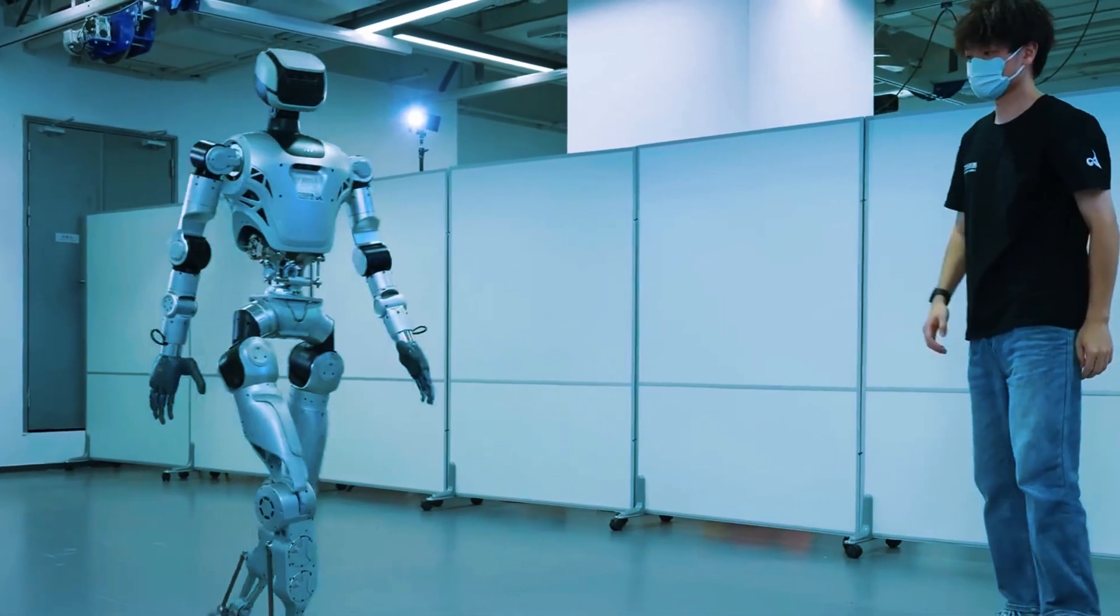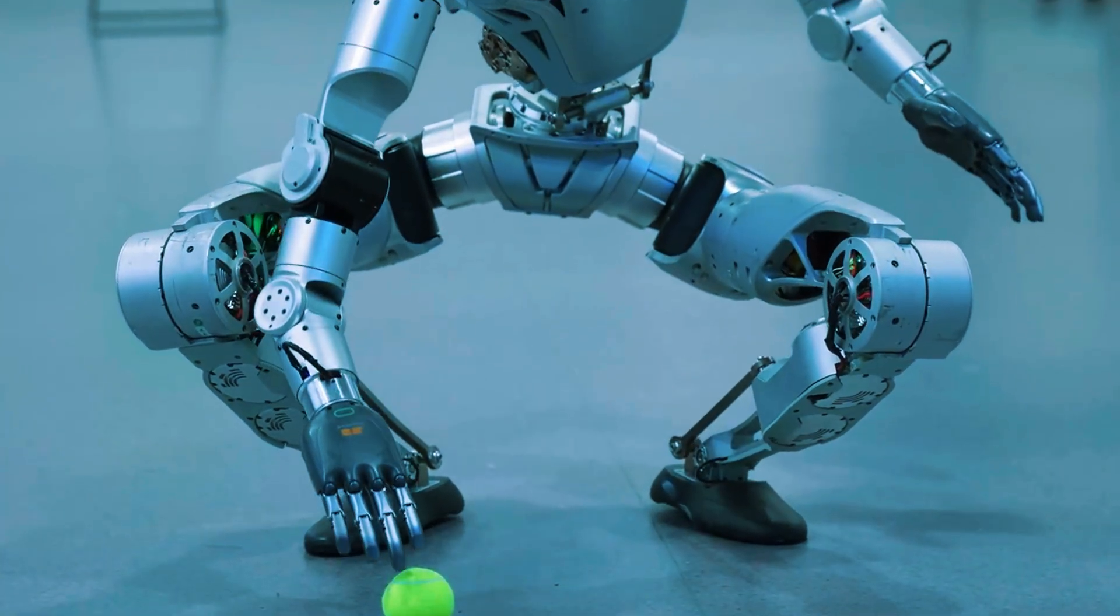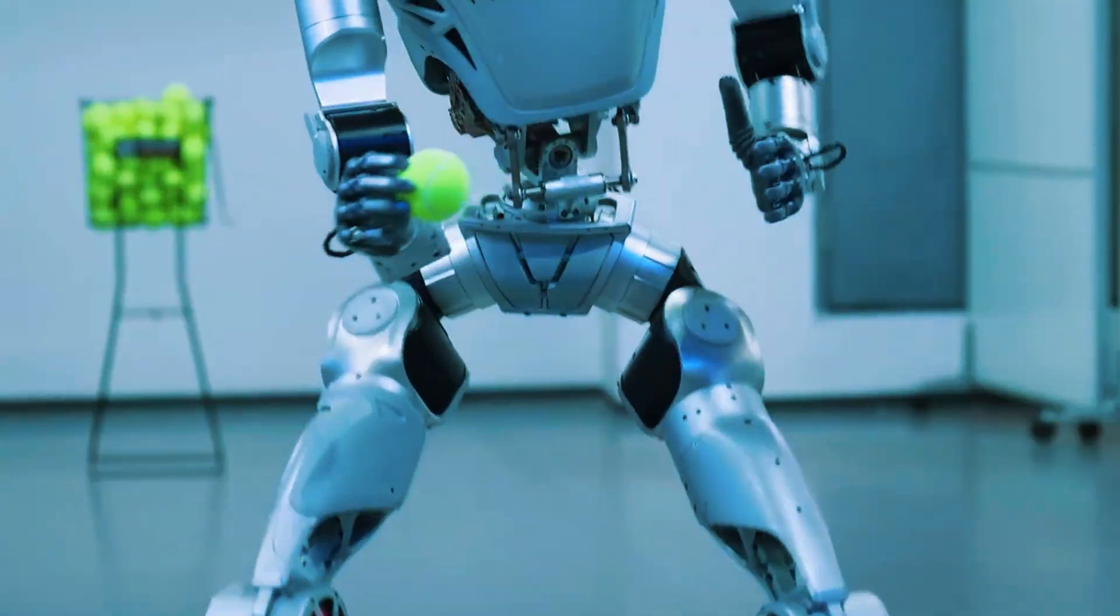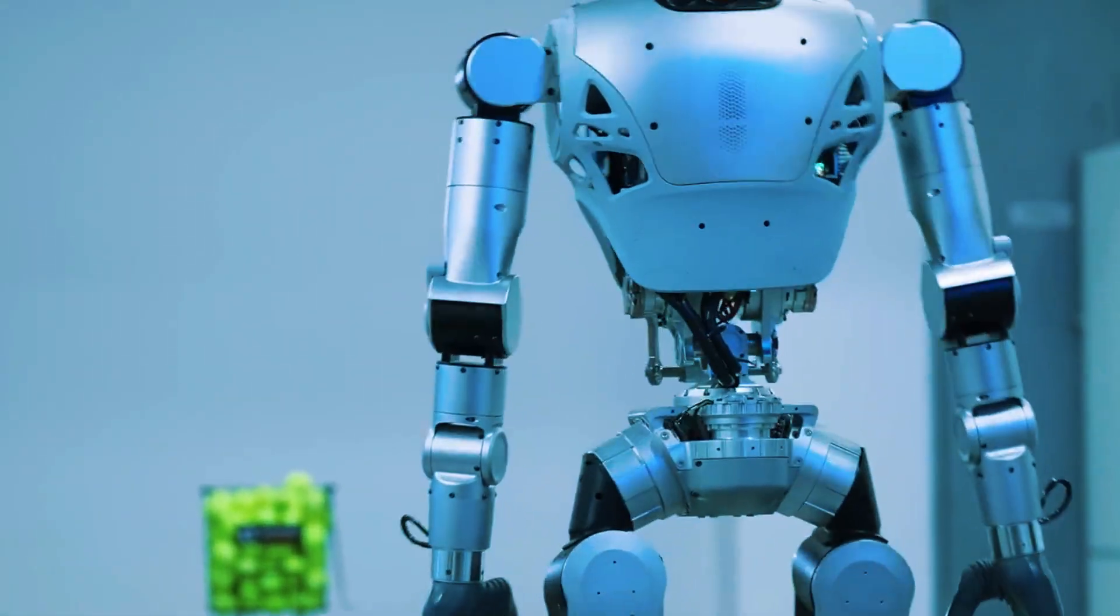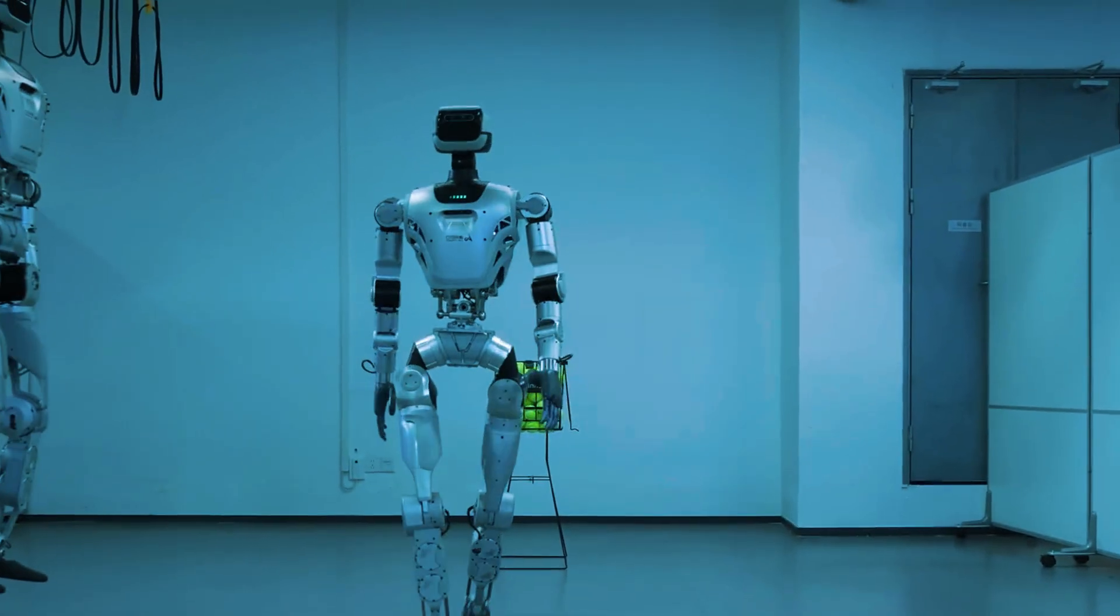Then it spots the ball. Step by step, Ollie moves toward it. No jerky stutters, no robotic wobble. Just controlled, balanced motion. And right here is where most robots fail. Bending down to ground level while keeping balance. That's one of the hardest challenges.